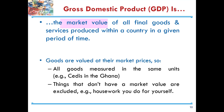There are key words we need to take into account. The very first is market value — goods are valued at the market price, so all goods are measured in the same unit. In this case, the currency is Ghana cedis. Things that cannot have a market value are excluded, such as household work we do for ourselves. Goods that do not have a market value or for which we cannot see prices on the market will be excluded from the GDP calculation.